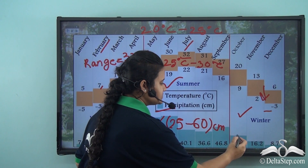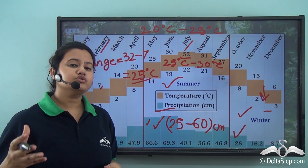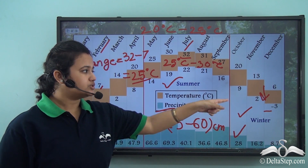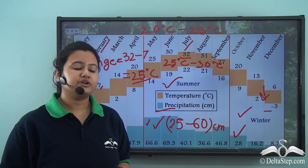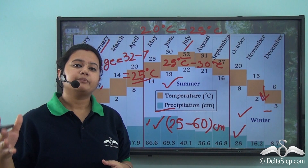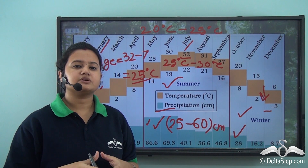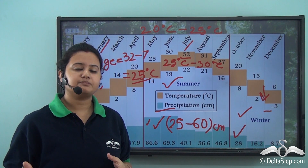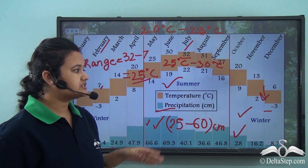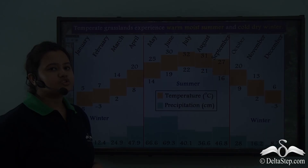Winter months are comparatively drier than summer months. The most common form of precipitation during winter is snowfall, because temperatures sometimes drop below freezing point. Notably, summers in temperate grasslands are short-lived, whereas winter prevails for the longer part of the year.